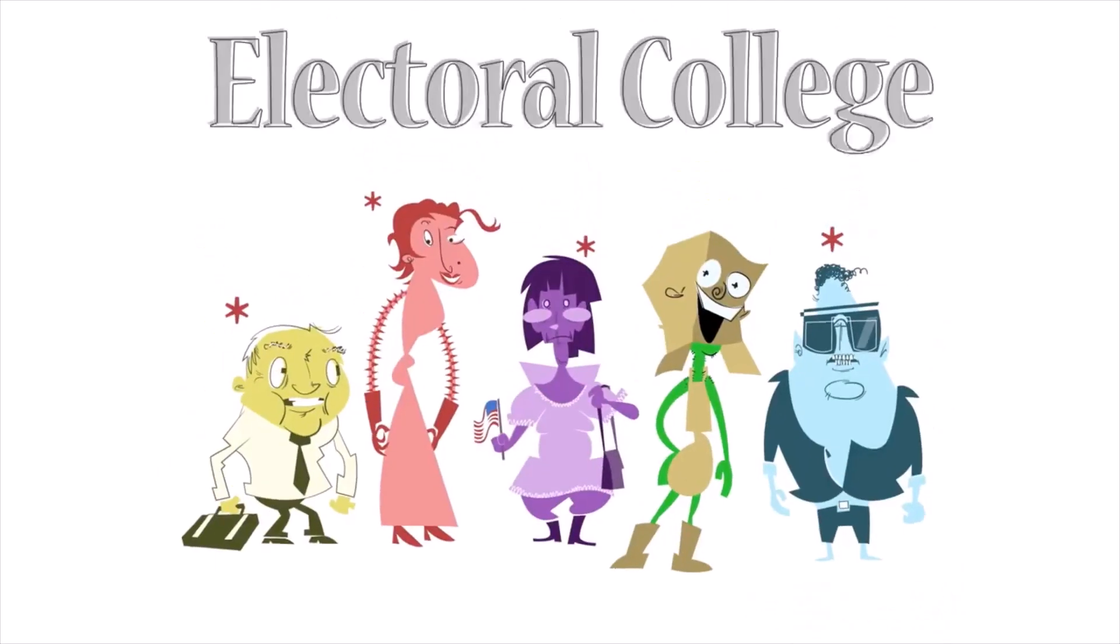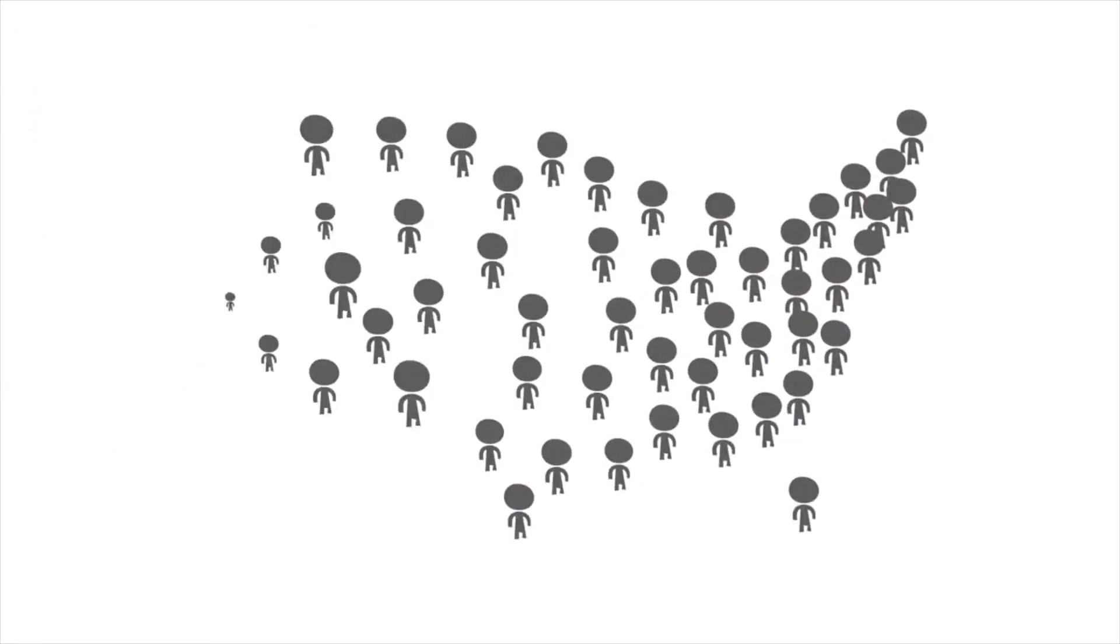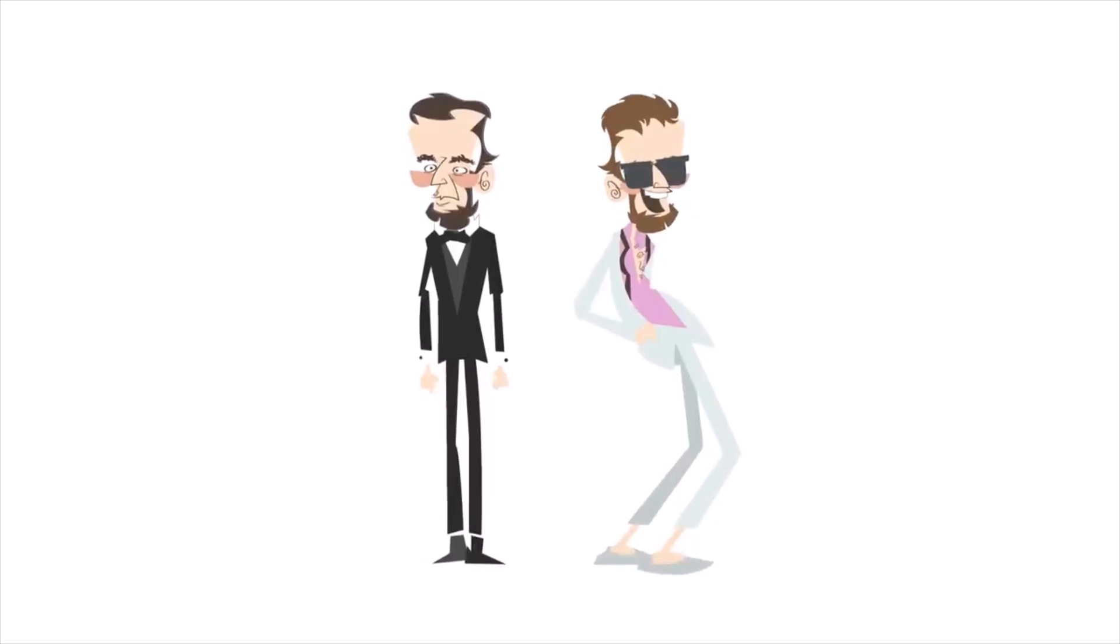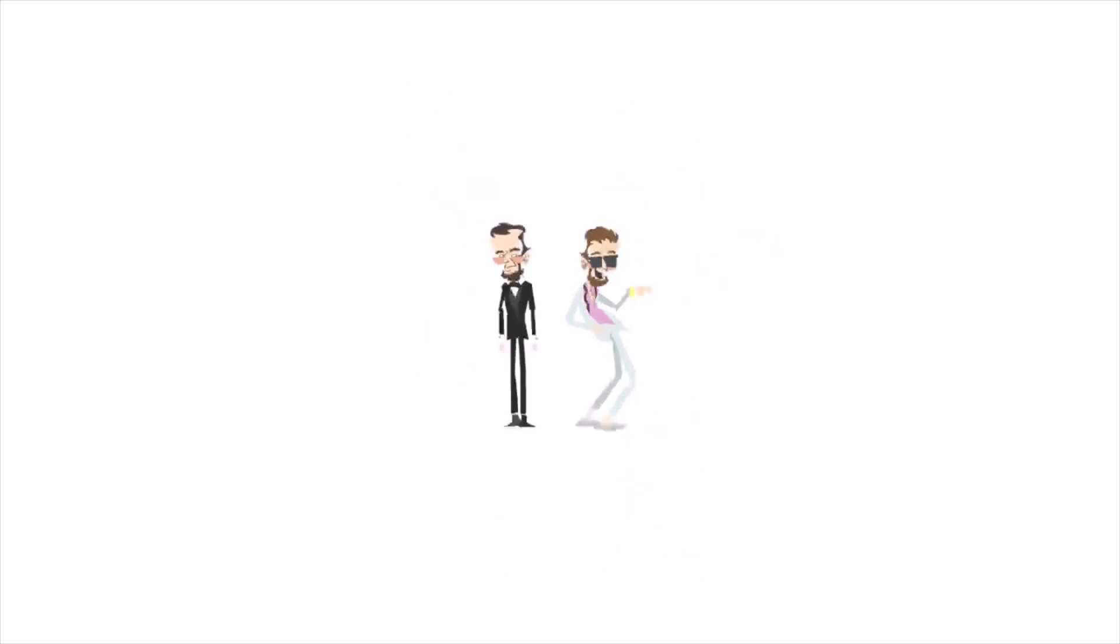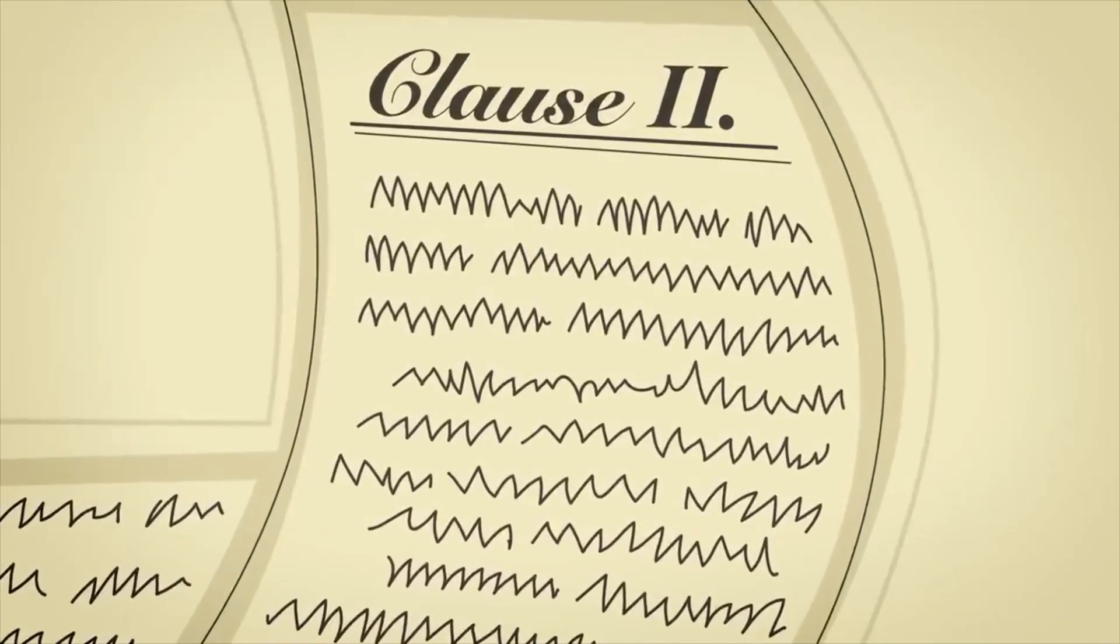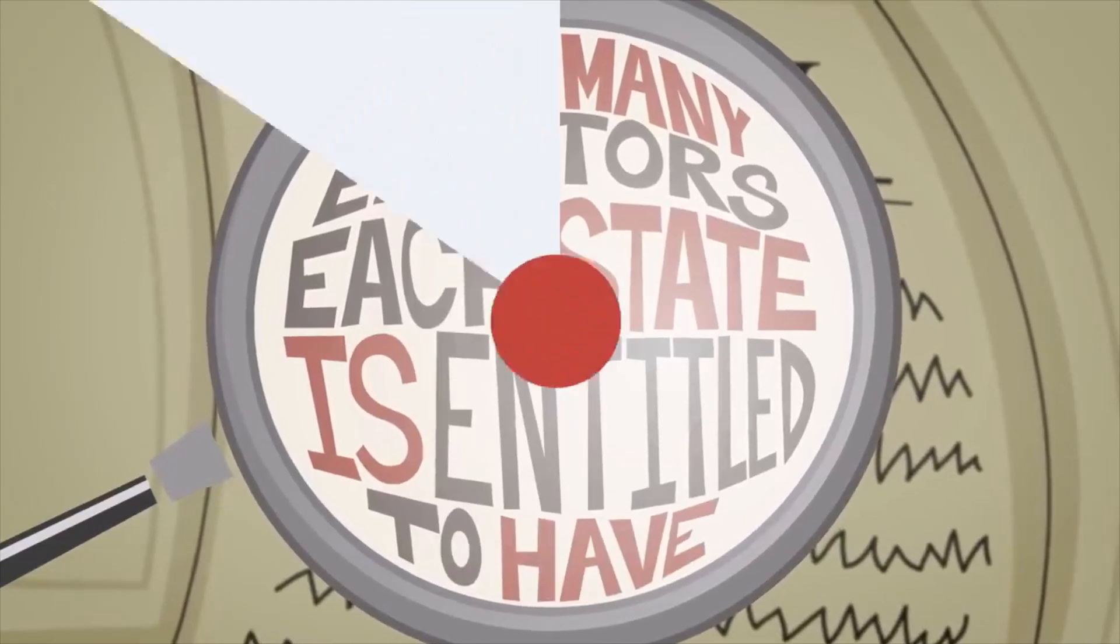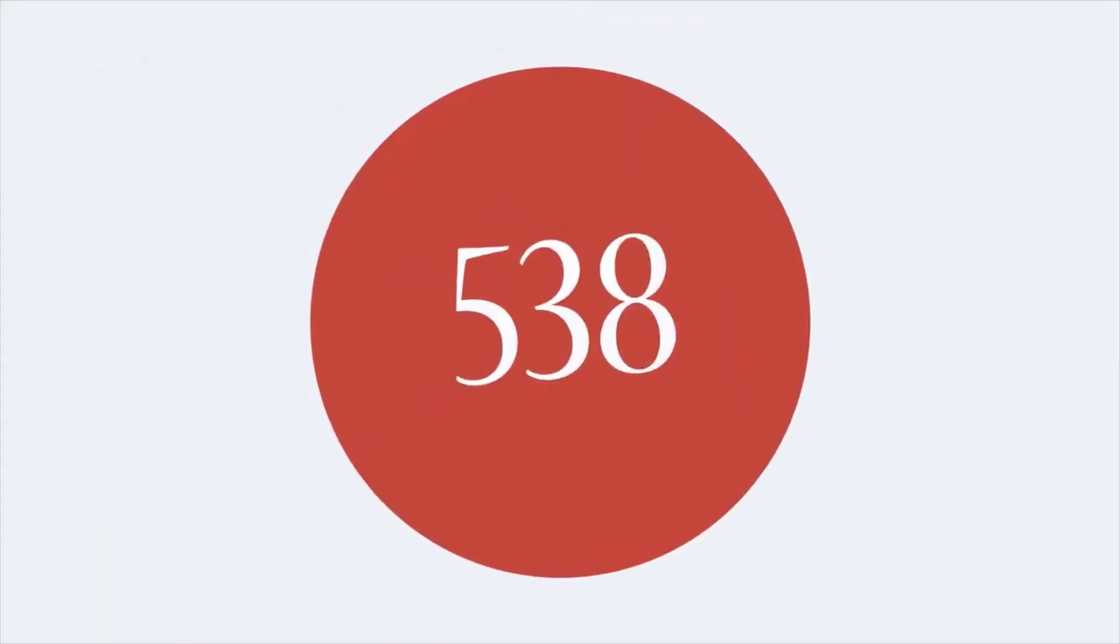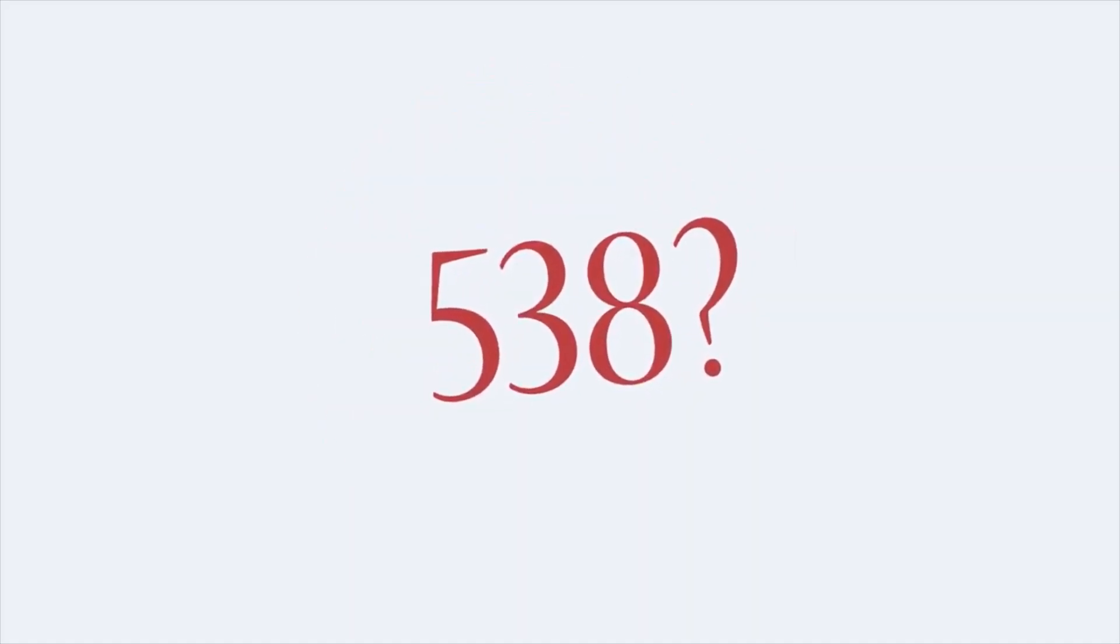Most people have heard of the Electoral College during presidential election years. But what exactly is the Electoral College? Simply said, it is a group of people appointed by each state who formally elect the president and vice president of the United States. To understand how this process began and how it continues today, we can look at the Constitution of the United States. Article 2, Section 1, Clause 2 of the Constitution specifies how many electors each state is entitled to have. Since 1964, there have been 538 electors in each presidential election. How do they decide on the number 538? Well, the number of electors is equal to the total voting membership of the United States Congress.